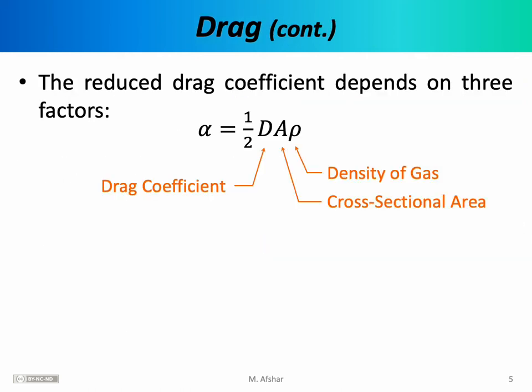Drag is a very common force, and we want to develop a deeper understanding of it. As we just discussed, the drag force is equal to alpha v squared, so the faster the object goes, the greater the resistive force. Alpha also plays a key role; it can be measured directly or calculated using a formula, though it is not obvious where that formula comes from and we will not derive it in this class.